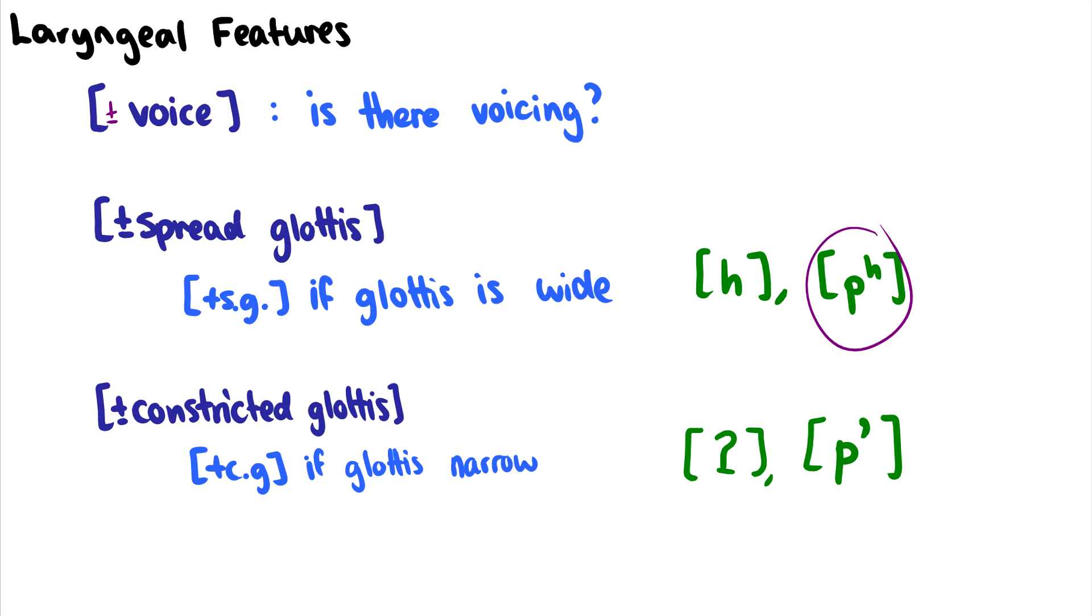So plus CG is a good way of getting at those sounds. Also for ejectives, I'm very bad at making ejectives, so I won't. But essentially, you eject air. It's a little bit different than aspiration. So it's not the same as puh. It's more like puh. That was absolutely terrible. Definitely check out an IPA voice chart online if you want to hear a good ejective and not that abysmal mess that I just made. But plus CG is a good way of getting at the ejectives. In fact, in English, if we want to talk about just the glottal stop, plus constricted glottis is all we need because it is the only plus CG sound we have in English.